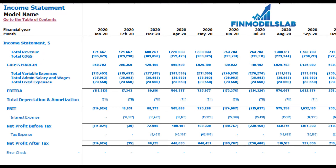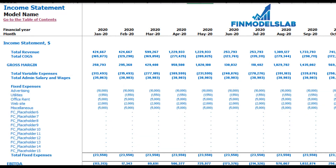On the income statement tab you may see the main components of your profit and loss: total revenue, total cost of goods sold, gross margin, total variable expenses, total admin salaries and wages, total fixed expenses, EBITDA, depreciation and amortization, EBIT, interest expense, net profit before tax, corporate tax, and net profit after tax. Each category has its own subcategories — you may click the plus button to see the detail, for example for fixed expenses or variable expenses.